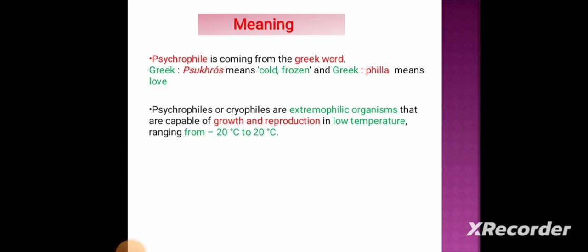Psychrophiles or cryophiles are extremophilic organisms that are capable of growth and reproduction in low temperatures, that range from minus 20 degrees Celsius to plus 20 degrees Celsius. The optimum growth temperature for psychrophiles is 15 degrees Celsius.